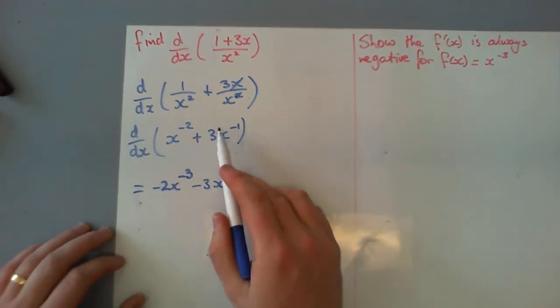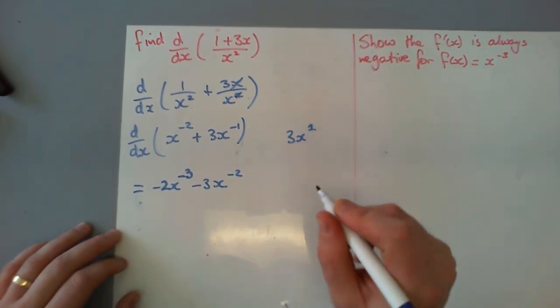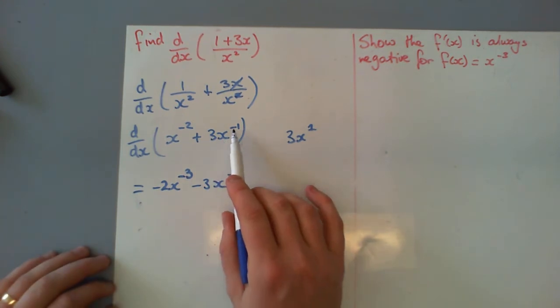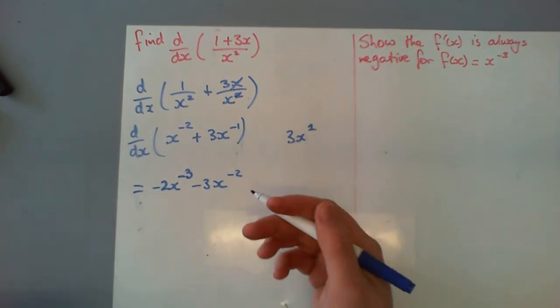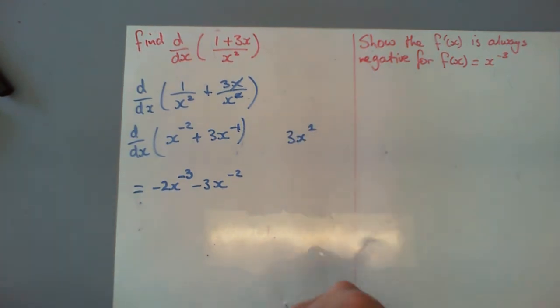And so the difference here, I see when we had just 3x to the power of positive 1, well, that x term would have dropped out. Well, you've got 3x to the negative 1. We can see that that term doesn't drop out because we're still reducing that power by 1. So it's going to make it negative 2.